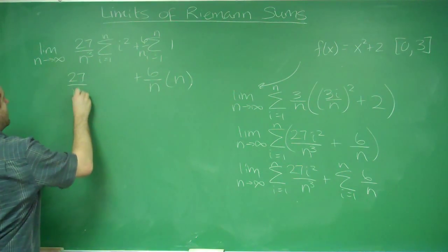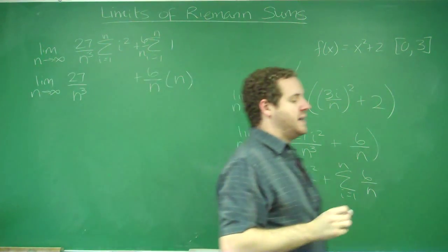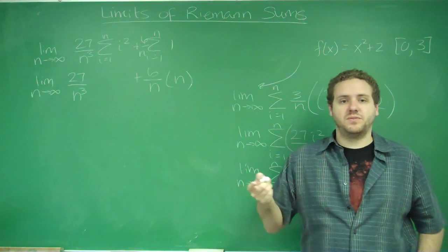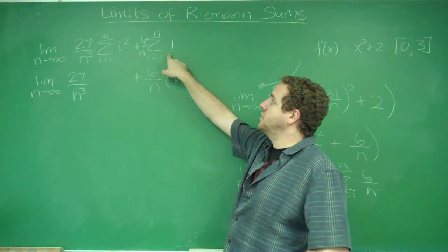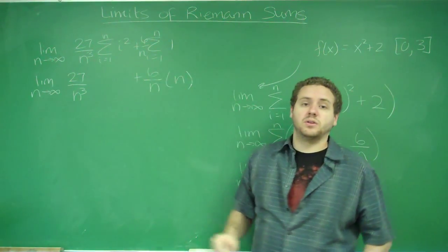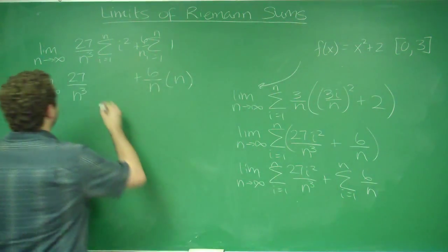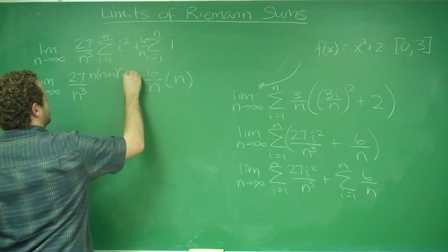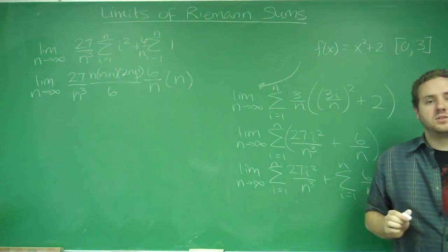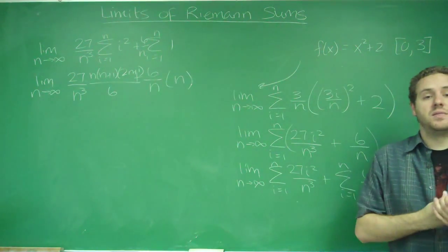For the sum of i squared, you're adding all the squares: 1 squared plus 2 squared plus 3 squared plus 4 squared, etc. — you're adding the next number squared each time. There's a formula for that: n times (n plus 1) times (2n plus 1), all over 6. That's not something you need to remember; it will always be provided on the test. Once you get to this point, that's when you substitute in that formula.